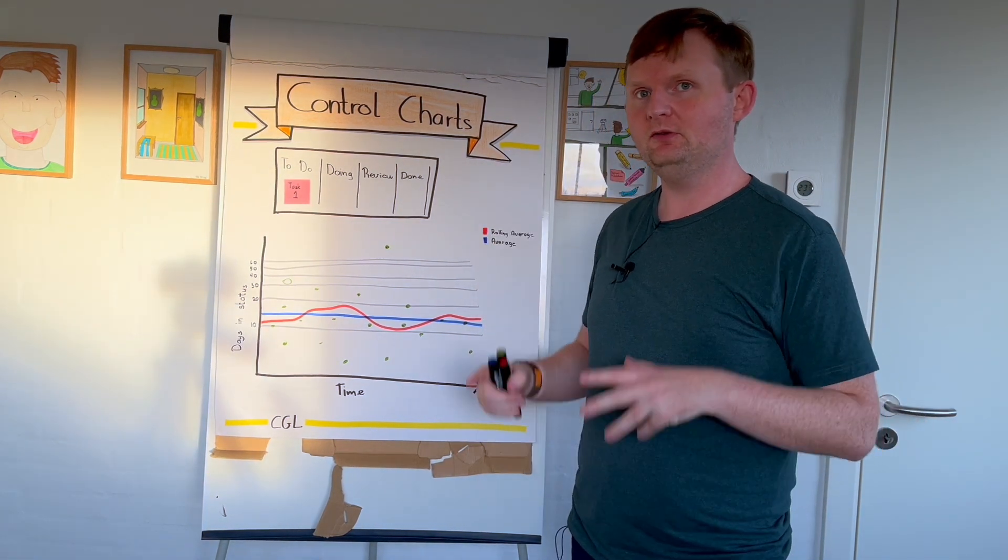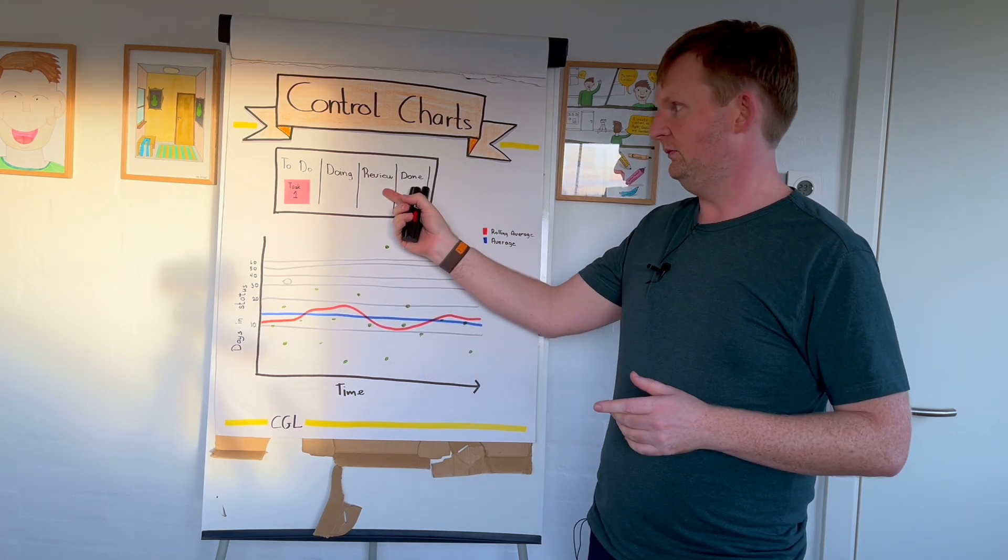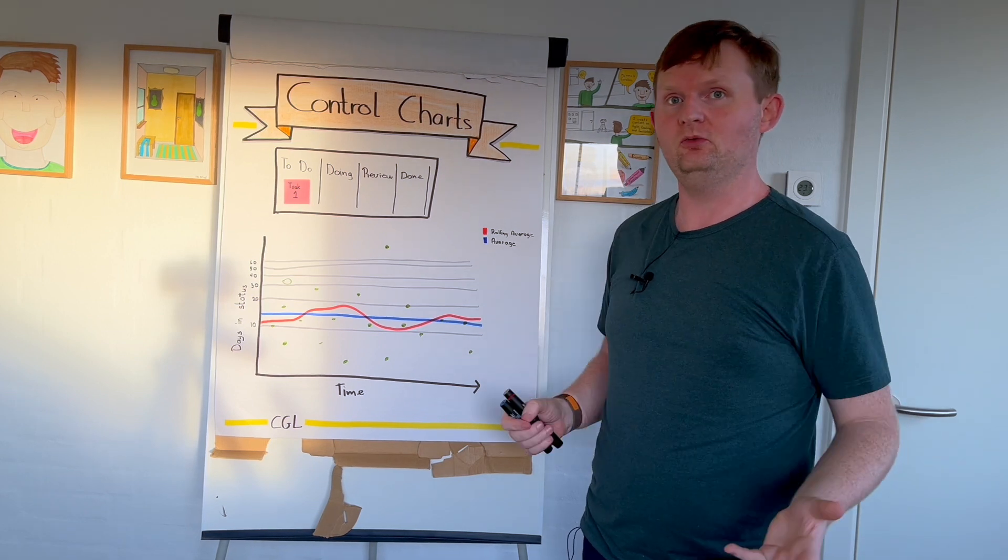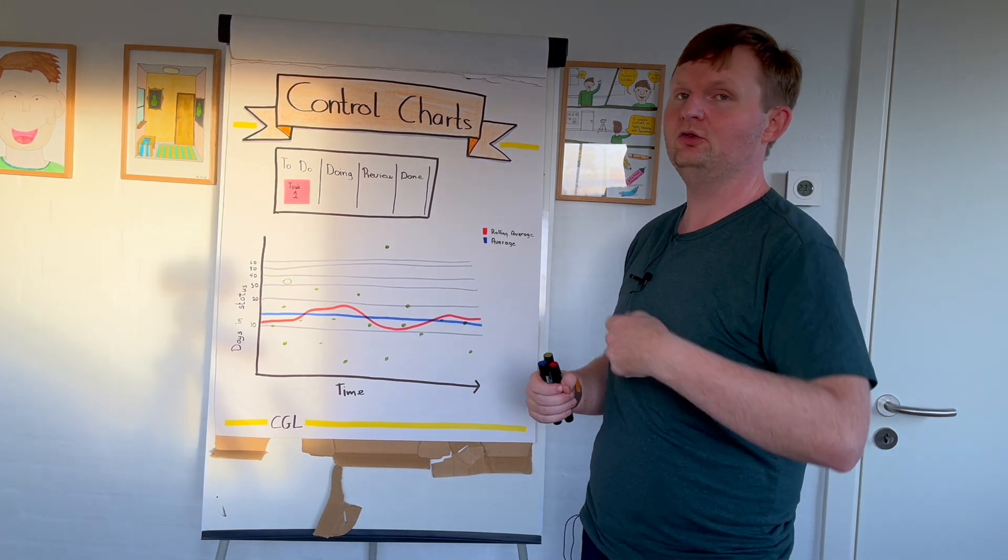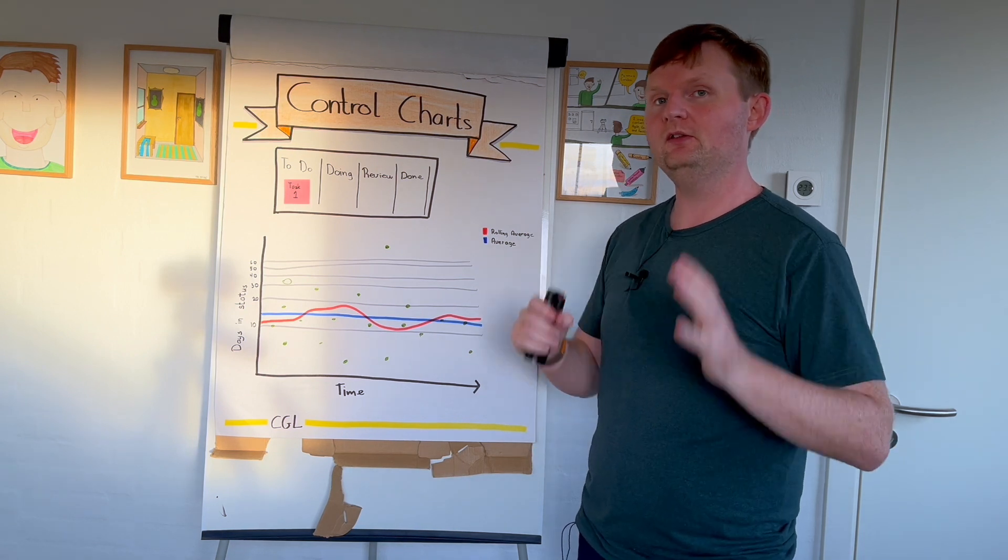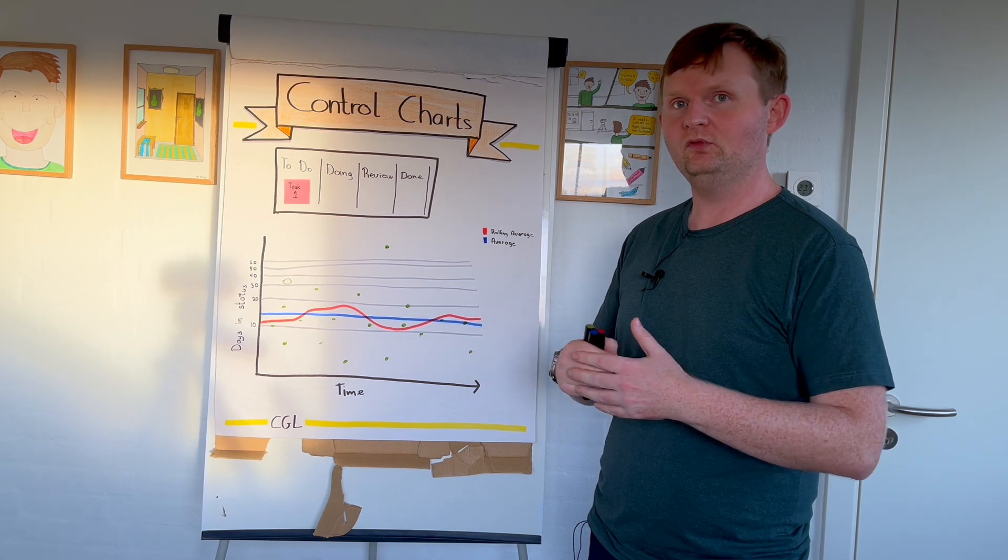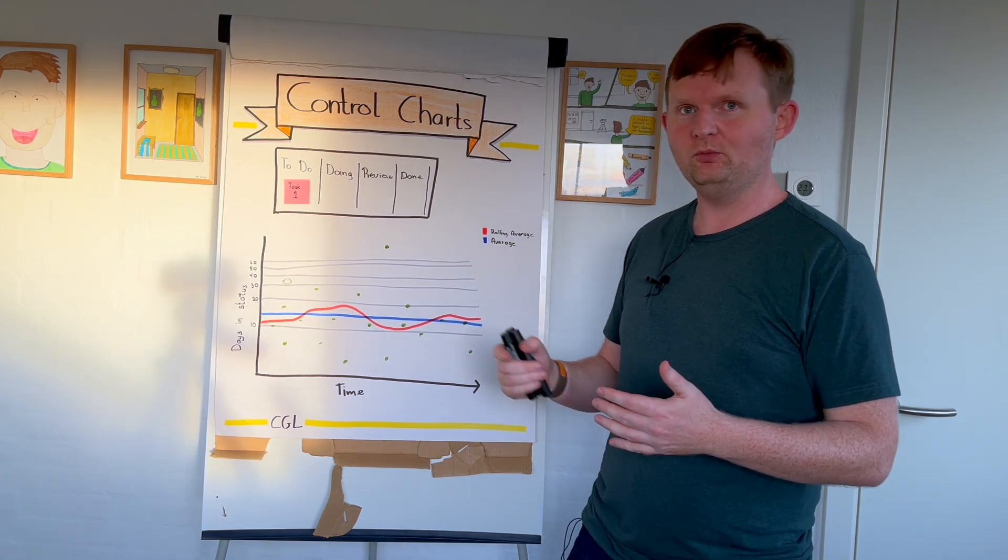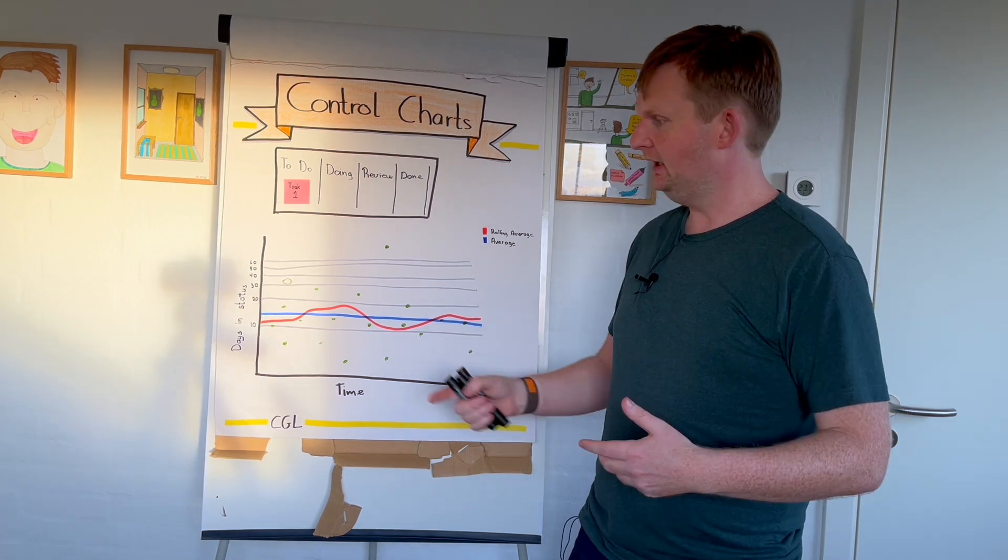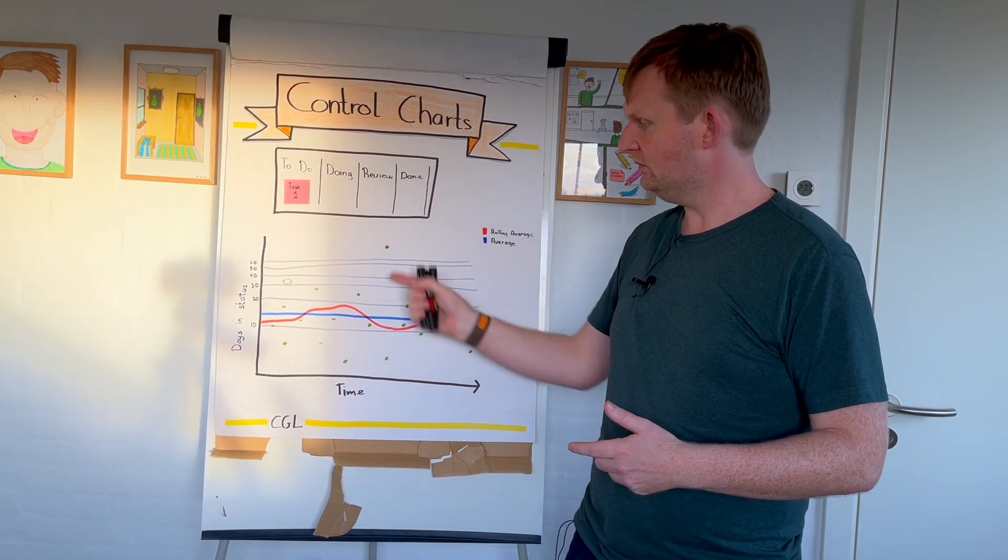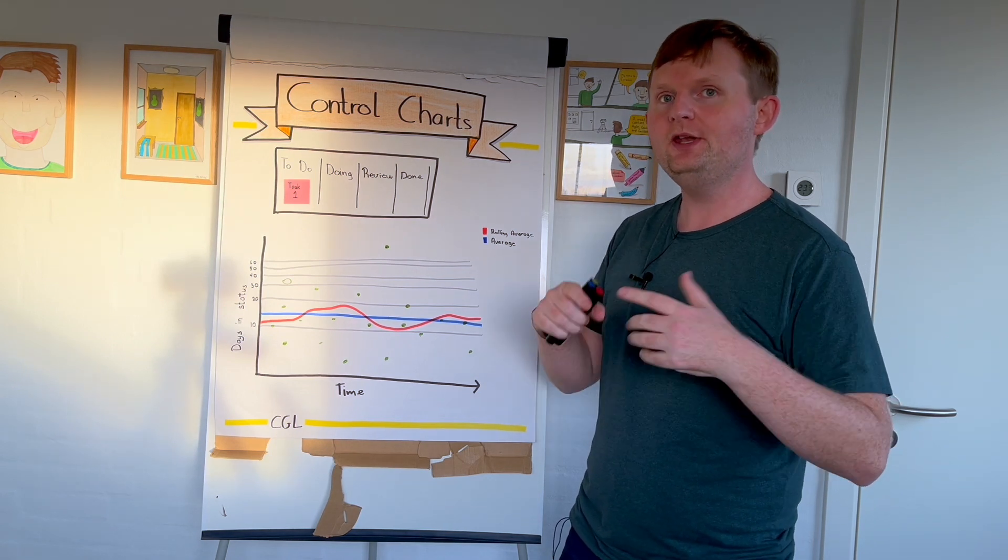But the nice thing about this control chart is that we can then start to look at, for instance, bottleneck in review or bottleneck in testing or whatever, and figure out how much is that hurting us. Is it something we should look at or do we have other problems? We can start to make predictions of in two weeks time we have so-and-so confidence based on the data that we will actually have finished these four tasks and so on.